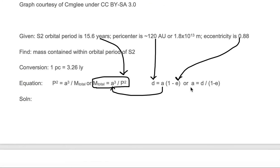So the first thing we want to do is solve for a, which is equal to d divided by 1 minus e. So we're going to set this equal to d which is 120 AU. The pericenter distance is the distance of closest approach.